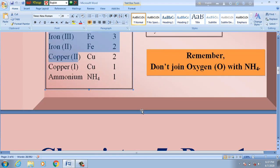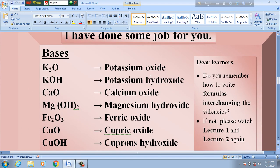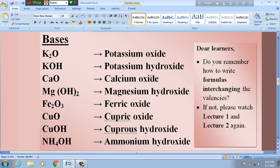Now, I have done some work for you. Here are some names of bases with their formulas. Potassium oxide - potassium metal with oxygen - this is a BASE. Potassium hydroxide is another BASE. In this way, all these are bases.